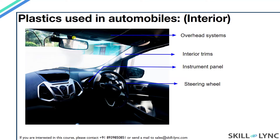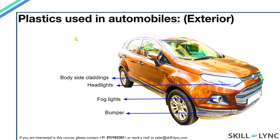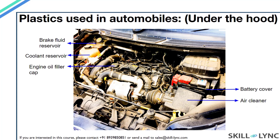In the next few slides we see car parts made using plastics. Interior injection molded plastic parts include overhead systems, interior trims, instrument panels, and steering wheels. On the car exterior, body side claddings, headlights, fog lights, and bumpers are made using plastics. Bumpers are usually made using a combination of polycarbonate and ABS, and ABS is also used for claddings. Car headlights are made using injection molding, with polymethyl methacrylate (PMMA) as the material. Under the car bonnet, reservoirs for brake fluid and coolant are made from plastics, as are the engine oil filler cap, battery cover, and air cleaner. In general, many parts of water induction and fuel systems also make use of plastics.